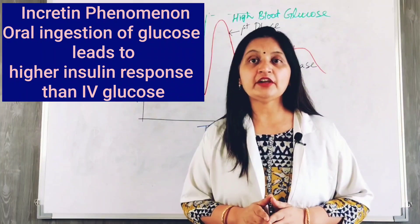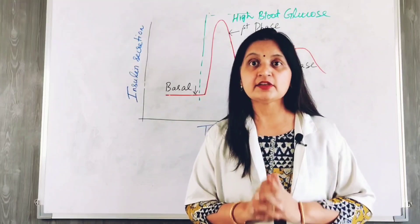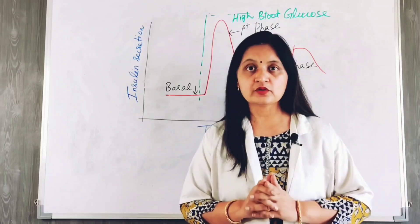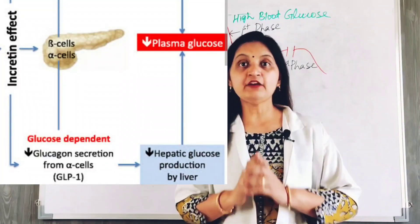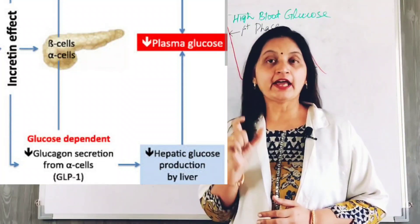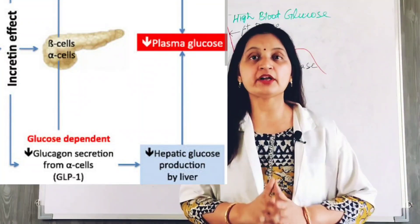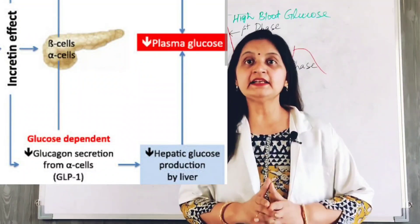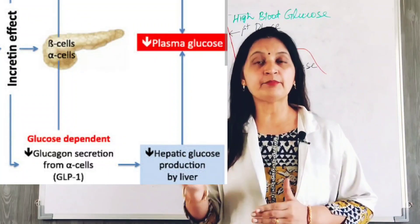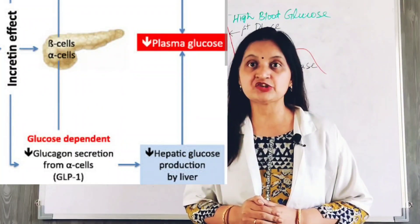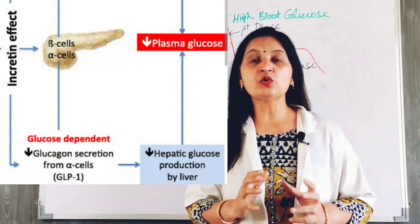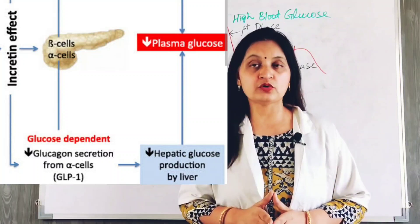The primary effect of incretin is to stimulate the pancreatic beta cells to release insulin into the circulation, which helps to lower the blood glucose level. The second function of incretin is to inhibit glucagon secretion. Glucagon is responsible for increased production of glucose by the liver through gluconeogenesis and glycogenolysis, raising blood glucose. By inhibiting or suppressing glucagon release, the blood glucose level is normalized.